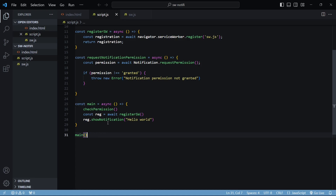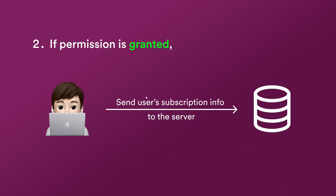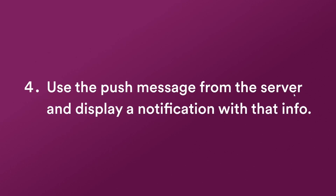Before getting into the push notification section, let me walk through the flow one more time. The first step was asking the user for permission to send notifications — we're already done with that. If the user allows our app, we need to send the user's information to the server and store it in a database. Third, we add logic on the server side to send the push message. Finally, we use the information present inside the push message from the server and display it as a notification to the client.